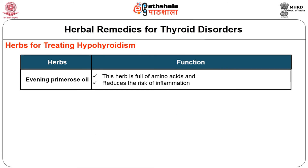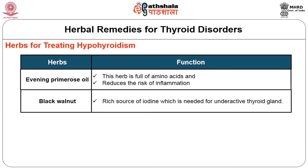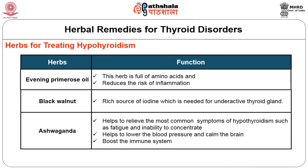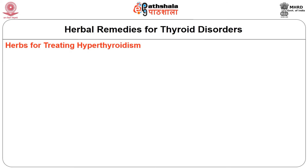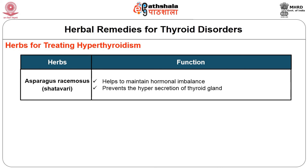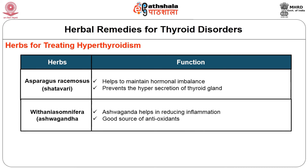Evening primrose is full of amino acids and helps to alleviate symptoms of underactive thyroid like hair loss and menstrual problems, and reduces the risk of inflammation. Black walnut is a rich source of iodine, needed for the underactive thyroid gland. Ashwagandha (Withania somnifera) helps relieve common symptoms of hypothyroidism such as fatigue, irritability, and inability to concentrate, helps lower blood pressure, calms the brain, and boosts the immune system. For treating hyperthyroidism, Asparagus racemosus helps maintain hormonal balance and prevents hypersecretion of the thyroid gland, while Ashwagandha helps reduce inflammation and is a good source of antioxidants.